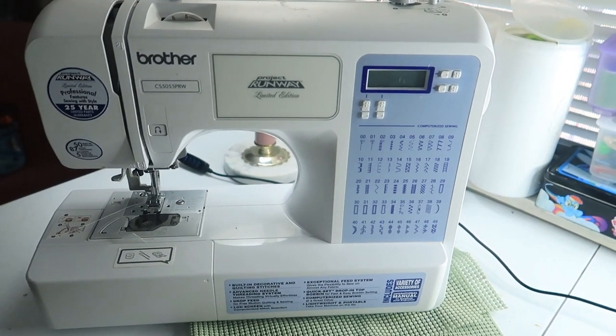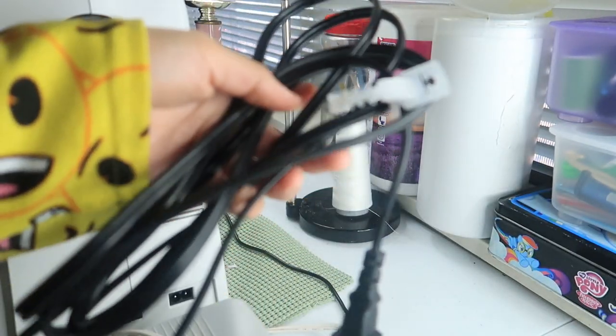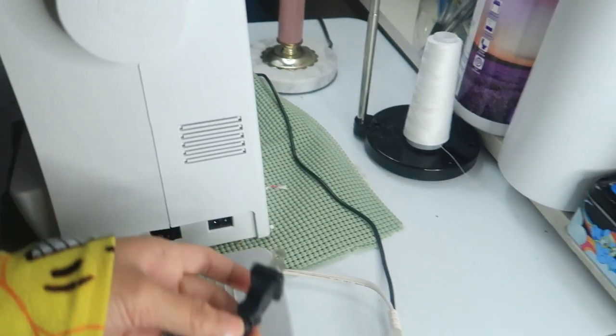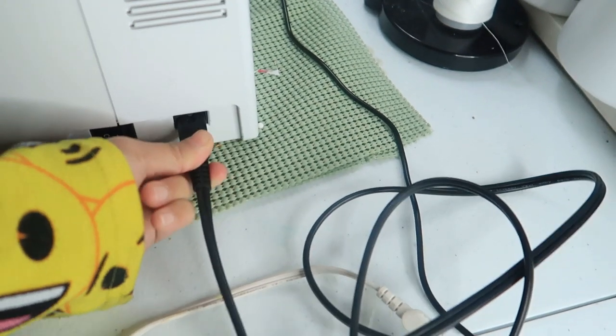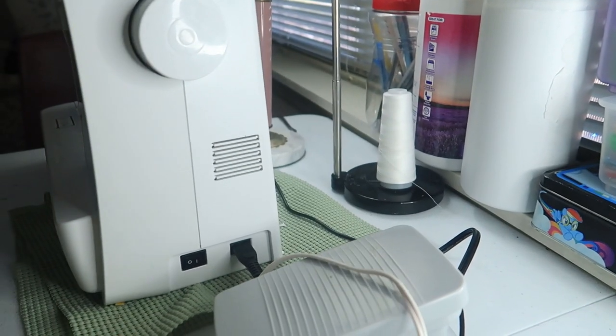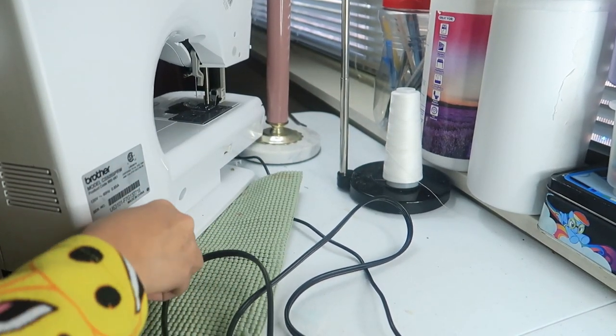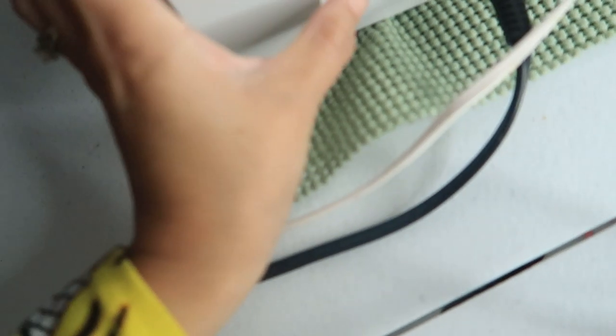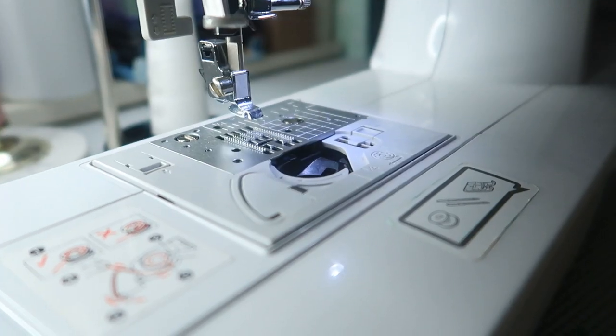So we got these two cords. The one is the pedal and the other one is for electricity. Let me show you how to plug it in. This one should go on this side and this pedal will go to the back, this one here. So this should go on the floor. Now that they are connected, you can turn it on. Notice that the light is on there.